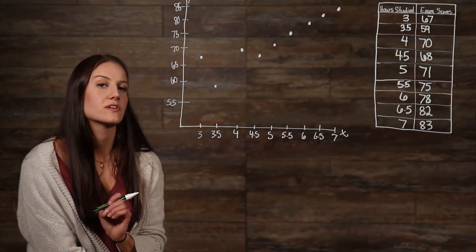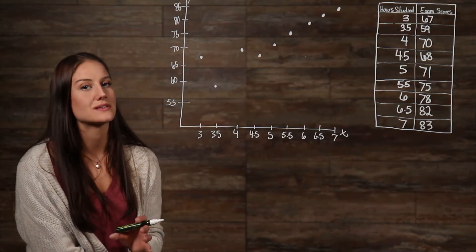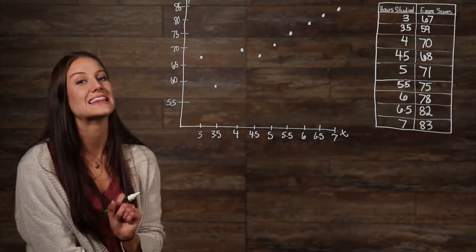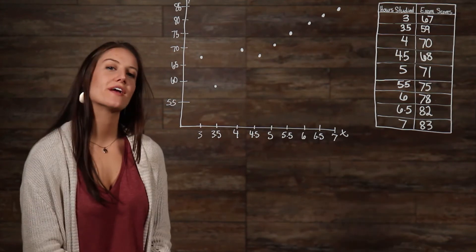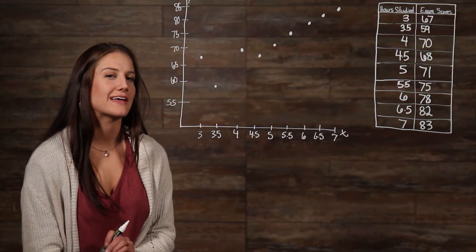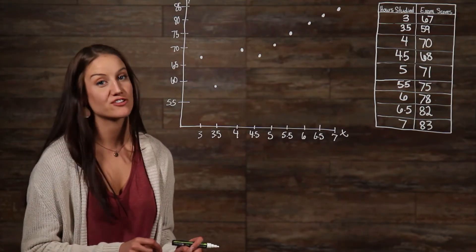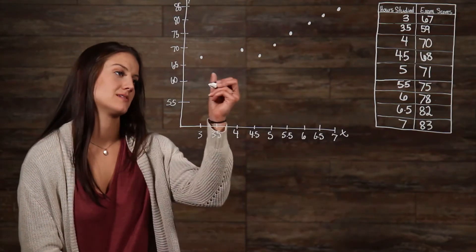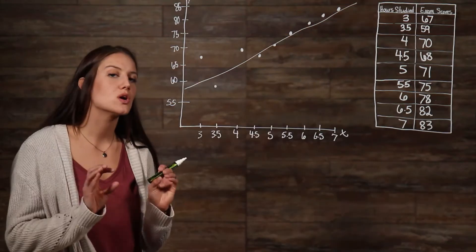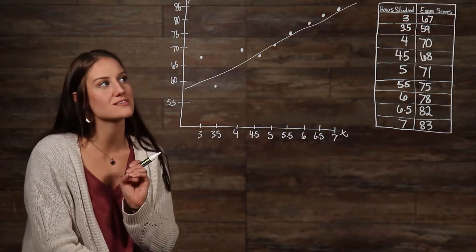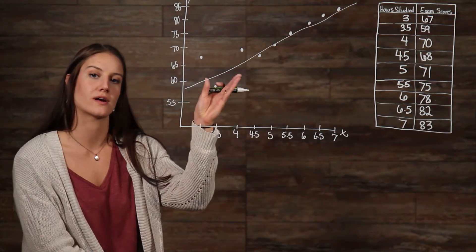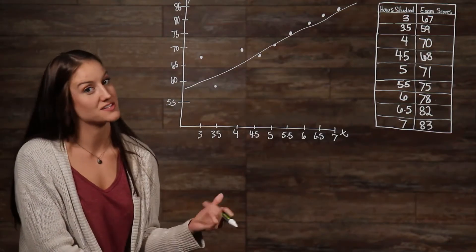Another way to see what type of relationship we have among our data points is by drawing what we call a line of best fit. When drawing a line of best fit, you need to draw a line that represents the general or average trend between the data points. You can see that this line has a positive slope because it's going upward, which means that it has a positive relationship.